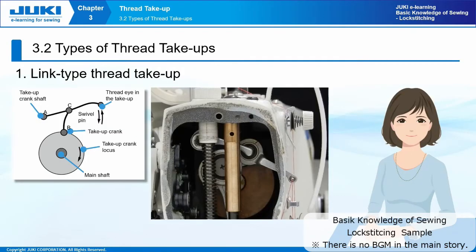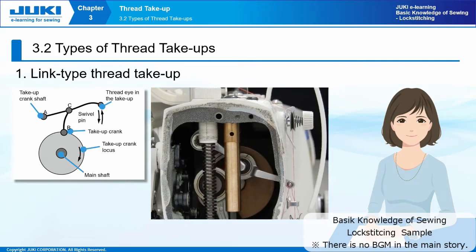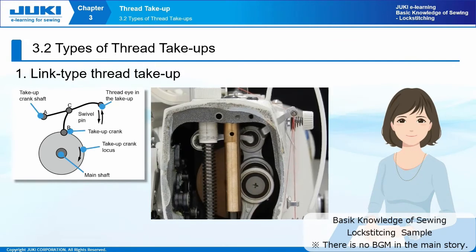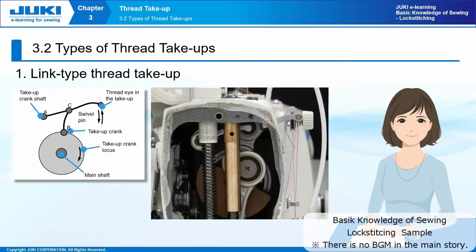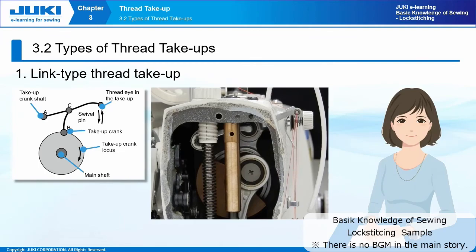Section 3.2: Types of thread take-ups. The link type thread take-up has a take-up crank turned by the rotating main shaft so as to move the take-up lever up and down. This is the type of take-up most widely used in common single needle lock stitch sewing machines. The link type thread take-up mechanism has low mechanical stress and therefore is suited for high-speed rotating machines.